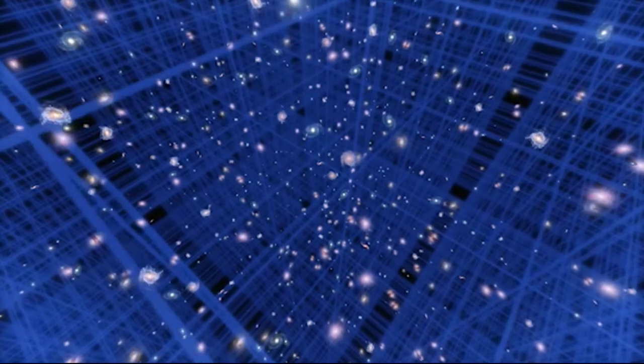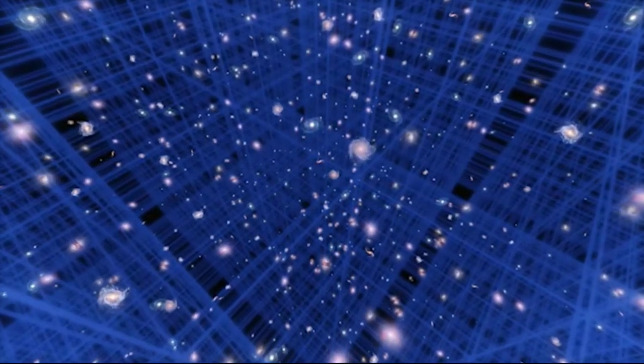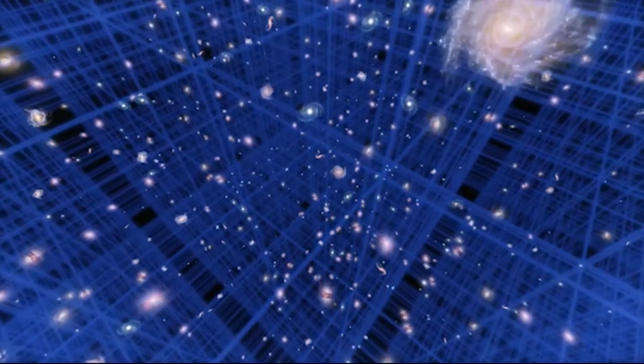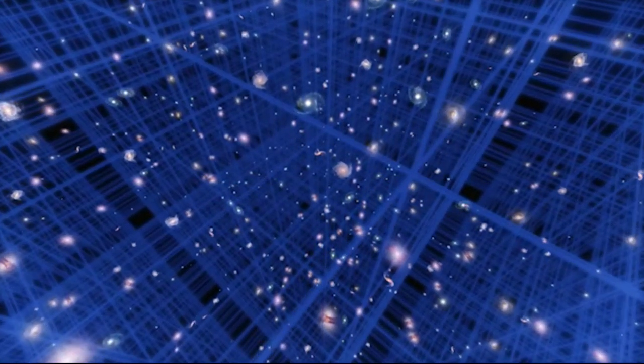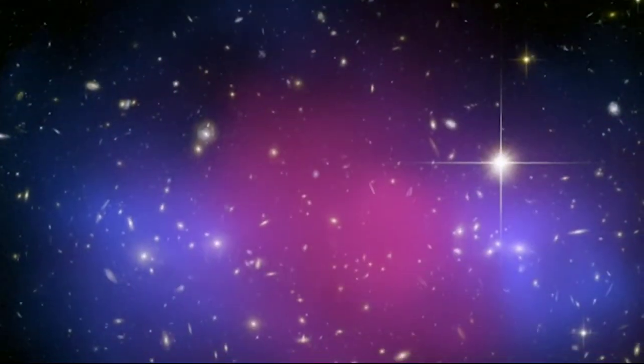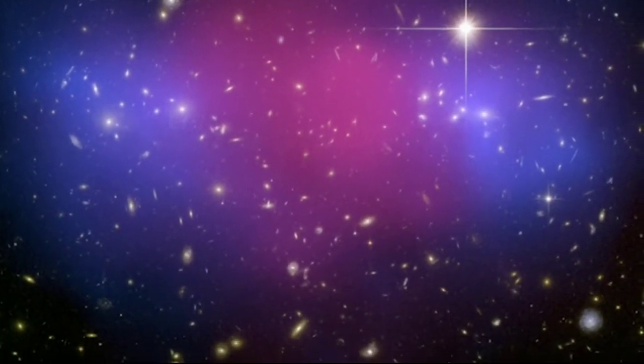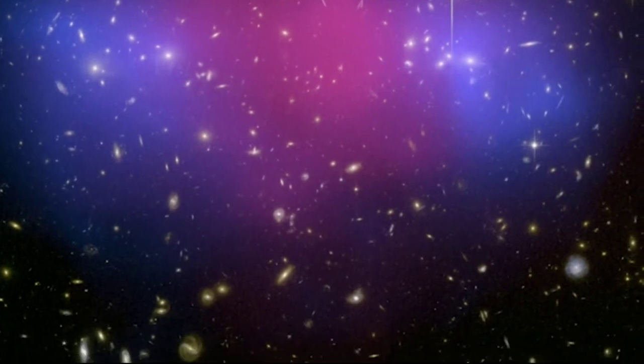Even stars at the periphery are orbiting at higher velocities, Rubin once explained in an interview with Discover. There has to be a lot of mass to make the stars orbit so rapidly, but we can't see it. We call this invisible mass dark matter.